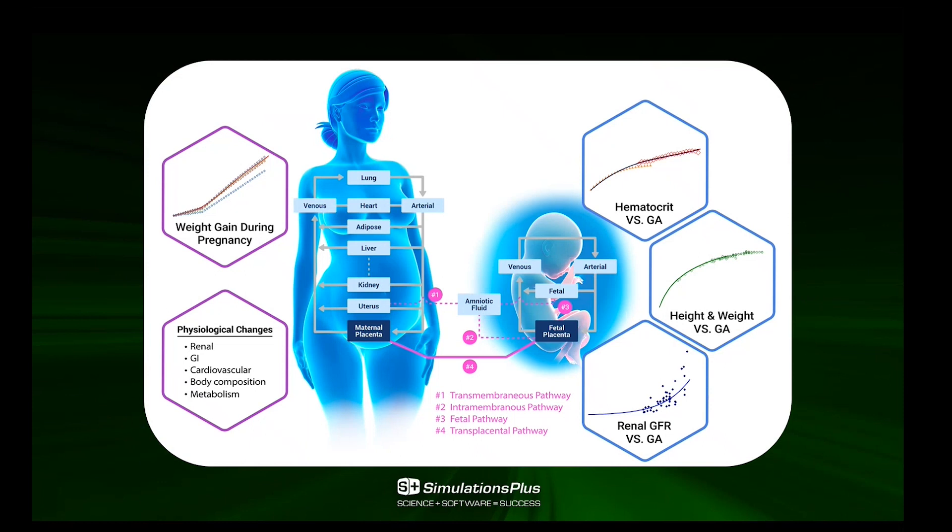Connections between the maternal and the fetus can happen using four pathways. And the importance of those pathways is dependent on where you are in the pregnancy. So we have the transmovenous pathway, the intramonous pathway, the fetal pathway, and the transpacental pathway.